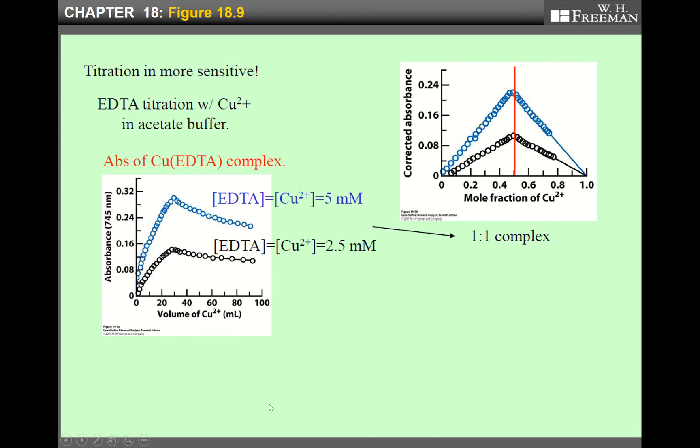Here is one example: EDTA titration with copper ion. This is copper ion. As we know, EDTA makes a very nice one-to-one complex with most metal ions. So the corrected maximum absorbance must occur at mole fraction of 0.5, right? We know the answer already, but let's prove experimentally. This left figure is the copper-EDTA complex, the absorbance with respect to volume of copper ion. This is the raw data.